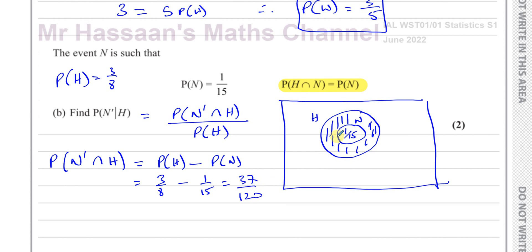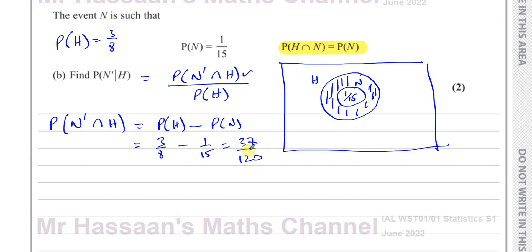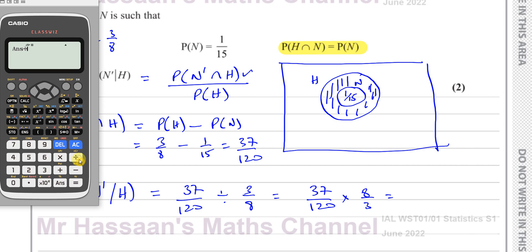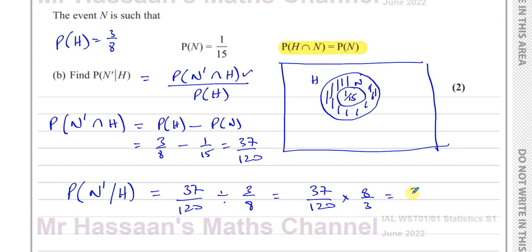We have the probability of N complement intersection H as 37 over 120. To get the conditional probability, we divide by P(H). So P(N complement given H) equals 37 over 120 divided by 3 eighths, which equals 37 over 120 multiplied by 8 over 3. That gives 37 over 45. So the probability of N complement given H is 37 over 45.